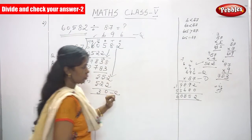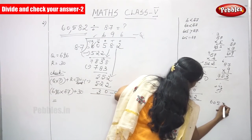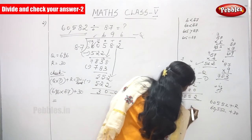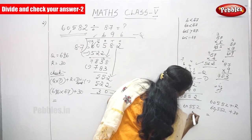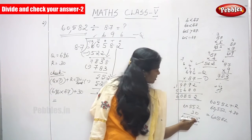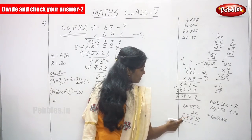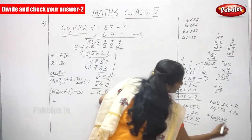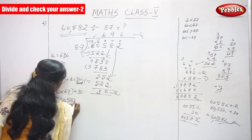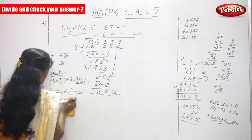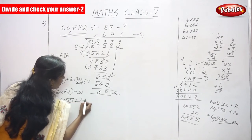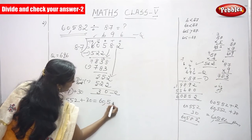But the original dividend is 60,582. So 60,552 plus the remainder 30: 2 plus 0 is 2, 5 plus 3 is 8, giving 60,582. The answer is the same — 60,582.